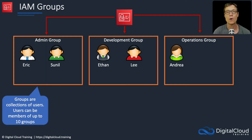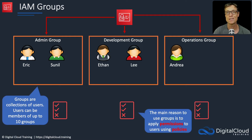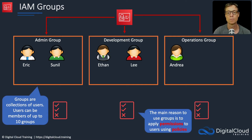Users can be a member of up to 10 groups at any one time. We then apply permissions policies to groups — this is the main reason why you have groups. You organize your users by how you want to apply permissions to them. We group admins, developers, and operations personnel into different groups and then apply policies to give them the permissions they need for their job role.